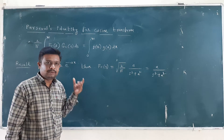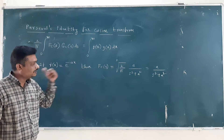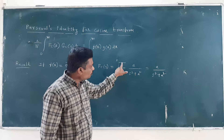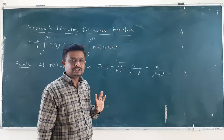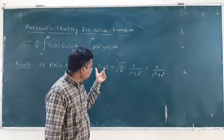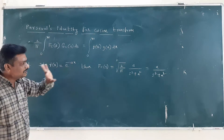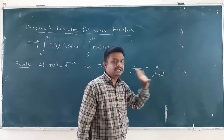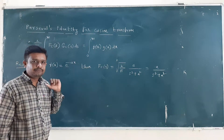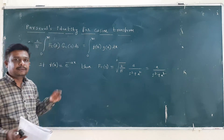While solving the example, I am going to use one result. We know that if f(x) = e to the power of minus ax, then its Fourier cosine transform is given by square root of 2 upon pi times a upon (s² + a²). Since I have added the 2 upon pi factor in this formula, while solving the example I will simply take Fc(s) = a upon (s² + a²). This result I have proved in my previous video — if you want, you can recall that video.